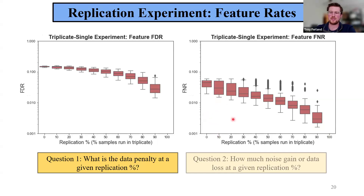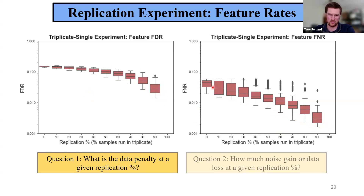We're about 10 times more likely to keep occurrences we should have removed than to remove something that should have been kept. When we zoom out to the feature level, we don't see as stark a difference between information gain and loss. In both cases, we see the same trend — increasing penalties with decreased replication. From zero to 90% replication, our false discovery rate changes about one order of magnitude while the false negative rate changes only about a factor of four. The steepest penalty additions for false discovery occur in the first couple steps, while for false negatives there's also a large jump at the last step.